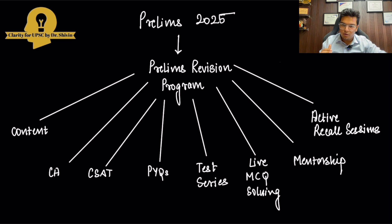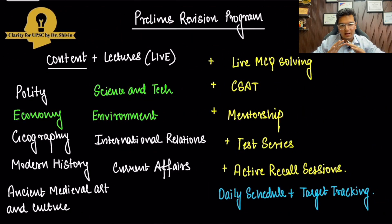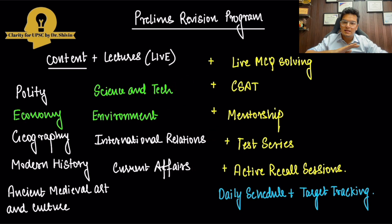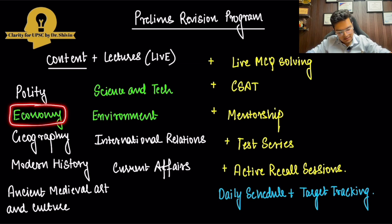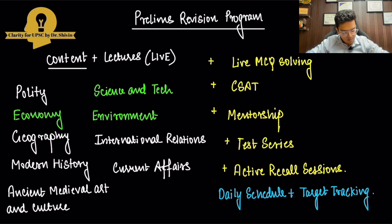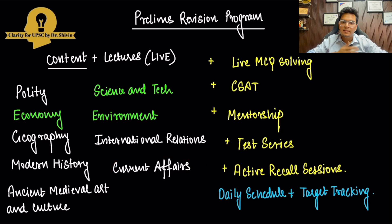In the prelims revision program, we have decided to put everything in one place, with the same quality, credibility, and affordability as MMP Plus. All the subjects in prelims — polity, economy, geography, modern history, ancient medieval art and culture, science and technology, environment, international relations, and current affairs — will have live lectures. I will be doing economy, science and technology, and environment. Polity will be done by Mudid Gupta sir, geography by Pallavi ma'am, modern history and ancient medieval art and culture by Kaval Baveja sir, international relations by Varun Jain sir, and current affairs by Mudid Jain sir.